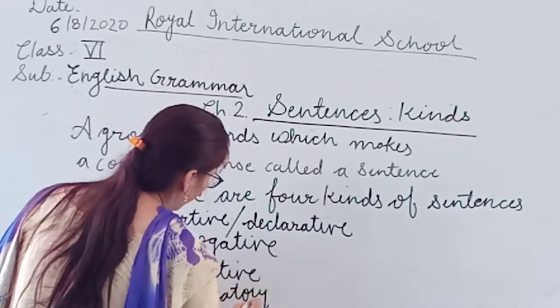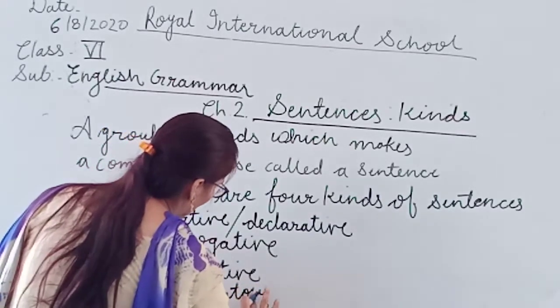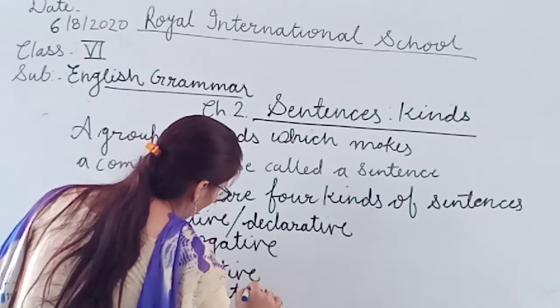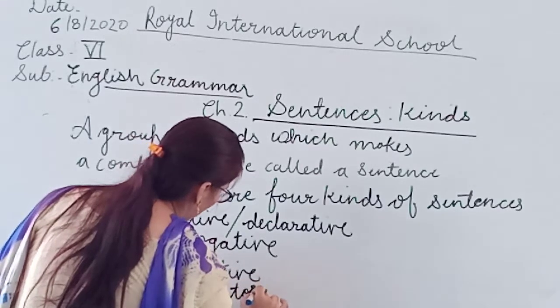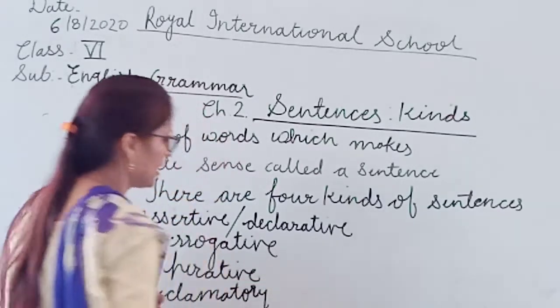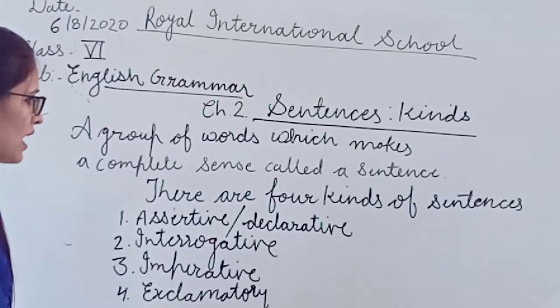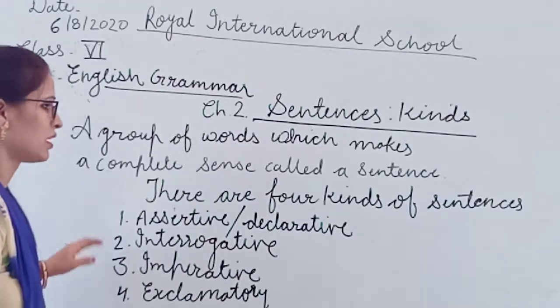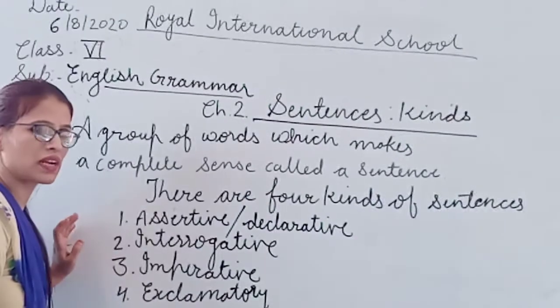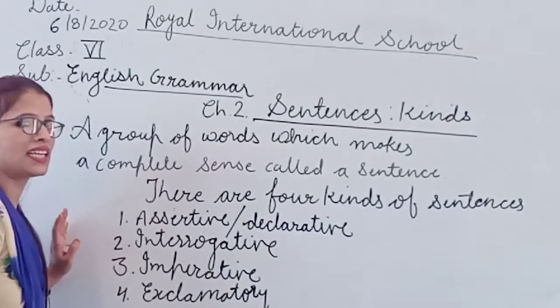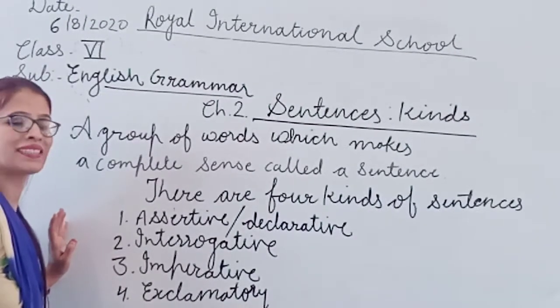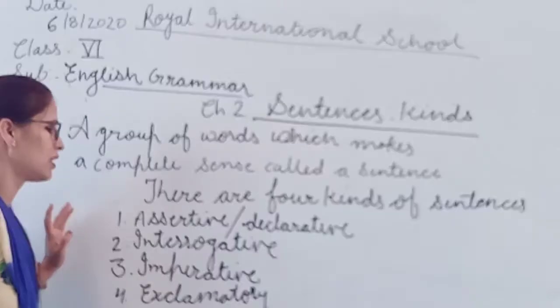So how many types or kinds of sentences are there? There are four kinds - that means sentences are of four types.